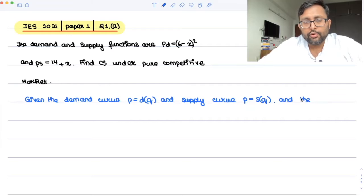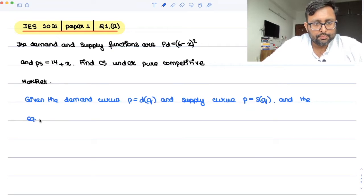And when you just find out the equilibrium point, where p is equal to your demand is equal to supply, and the equilibrium point p star, q star...